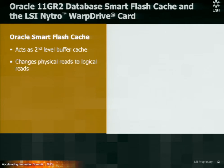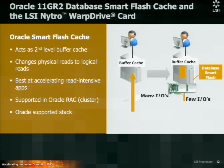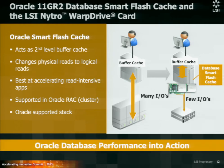Implementing the Nitro Warp Drive in an Oracle environment, you can turn on the Database Smart Flash Cache feature, which acts as a second-level buffer cache to the database. It changes physical reads to logical reads, and this is supported in a RAC cluster. When data is evicted from the buffer cache, Oracle writes it out to the Database Smart Flash Cache on the PCIe Flash device, and any subsequent reads will be read from the Smart Flash Cache.